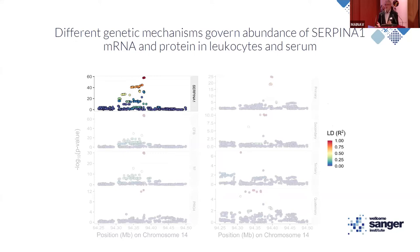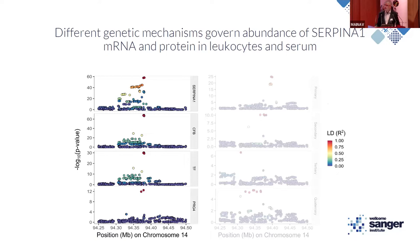The two trans-pQTL pairs were also quite interesting. Serpin A1 is a serine protease inhibitor — serine proteases are released into the bloodstream during the immune response, and inhibitors like Serpin A1 are key for tamping down the immune response, which is dysregulated in sepsis. Serpin A1 has a cis-pQTL in our data, and three trans-pQTLs lie in the same region. The trans-pQTL for complement factor B and serotransferrin co-localize with the Serpin A1 cis-pQTL, but the trans-pQTL for proteoglycan-4 does not.